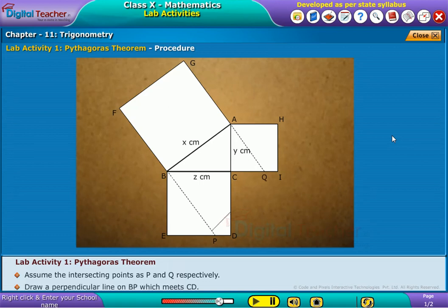Draw a perpendicular line on BP, which meets CD. Assume the intersecting points as R.